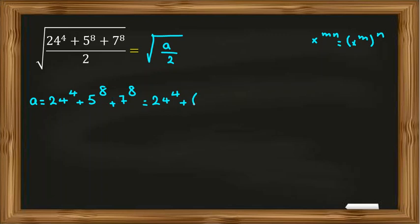So I can write 5 to the 8 equals 5 squared to the 4, and 7 to the 8 equals 7 squared to the 4. So it will be 24 to the 4 plus 25 to the 4 plus 7 squared is 49 to the 4.